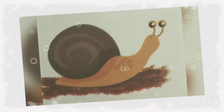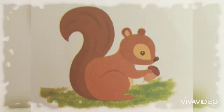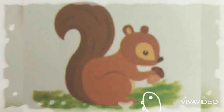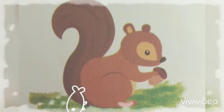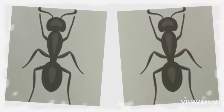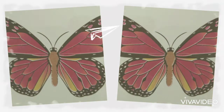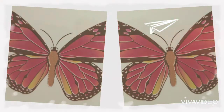What is this? This is a snail. Our next picture is squirrel. What is this? This is a squirrel. And the next is ant. What is this? This is an ant. What is this? This is a butterfly.